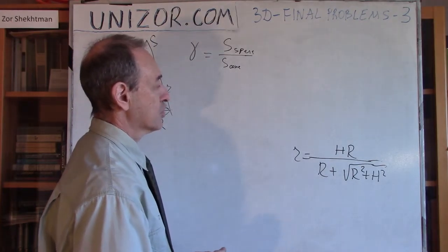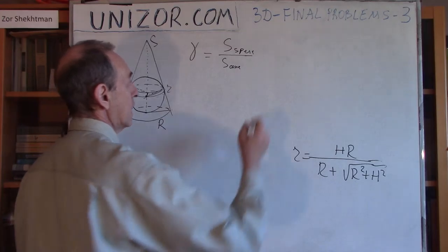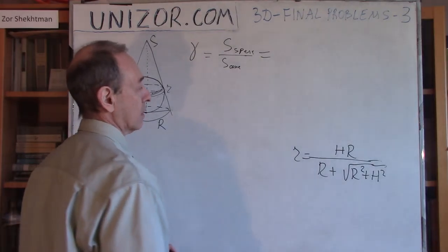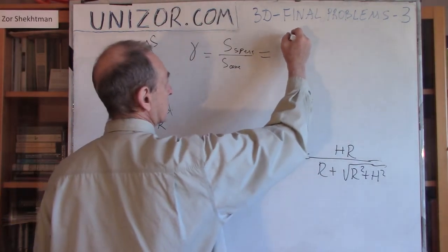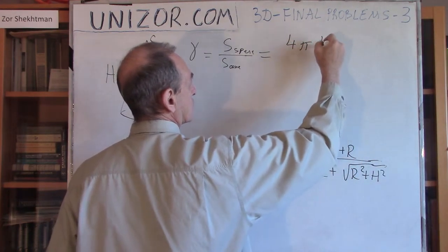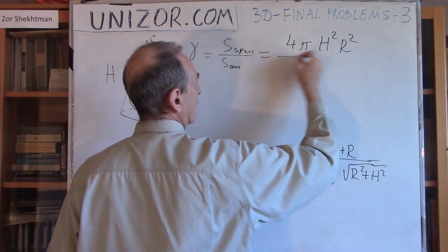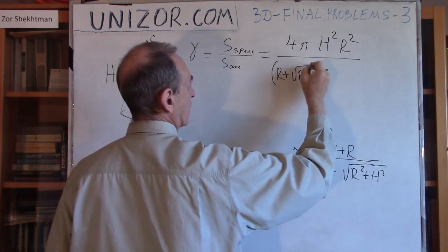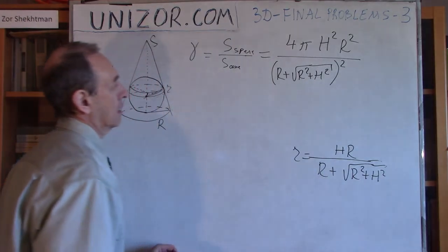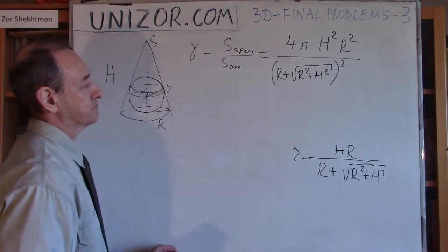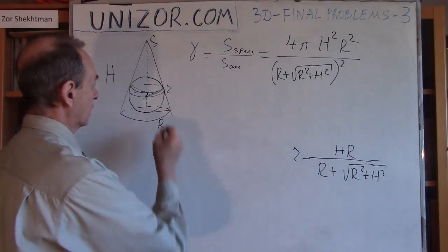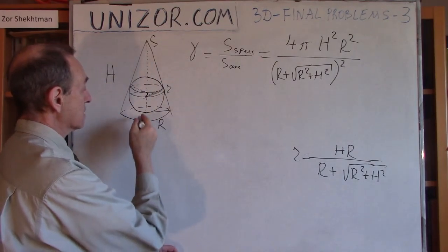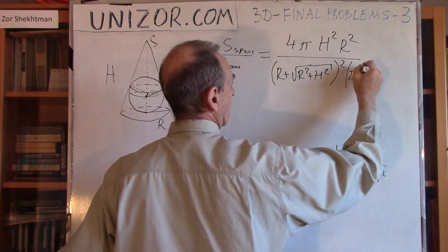Let's do the straight algebraic manipulations. The area of the sphere is 4π times radius squared. This is the radius, so it's 4π times square of this, which is H²R² divided by (R + √(R² + H²))². What is the surface area of the cone? That's the base plus the side surface. The base is πR².